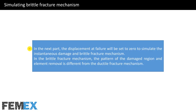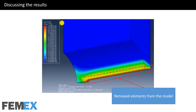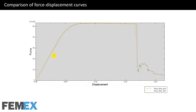In the next part, the displacement at failure will be set to 0 to simulate the instantaneous damage and brittle fracture mechanism. In the brittle fracture mechanism, the pattern of the damage region and element removal is different from the ductile fracture mechanism. This is the contour of damage initiation criterion, and the damage region is perpendicular to the loading direction, and these elements are removed during the simulation. This is the comparison of obtained force-displacement curves using the instantaneous damage assumption. The yellow curve is obtained using the Abacus Standard Solver, and the green curve is obtained using the Abacus Explicit Solver. You can see a sudden drop in the force-displacement curve, which is due to the definition of instantaneous damage.